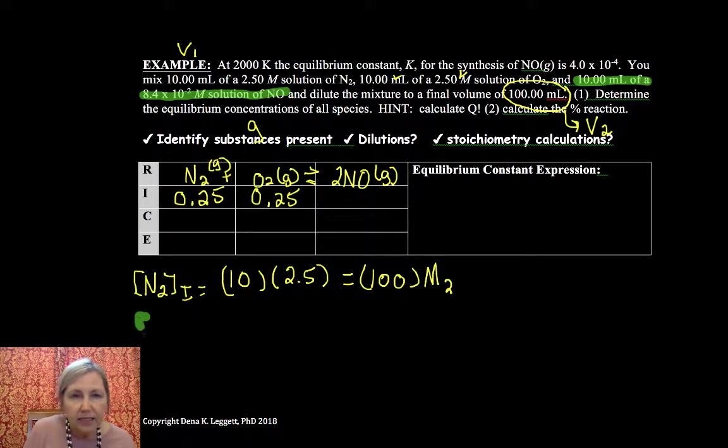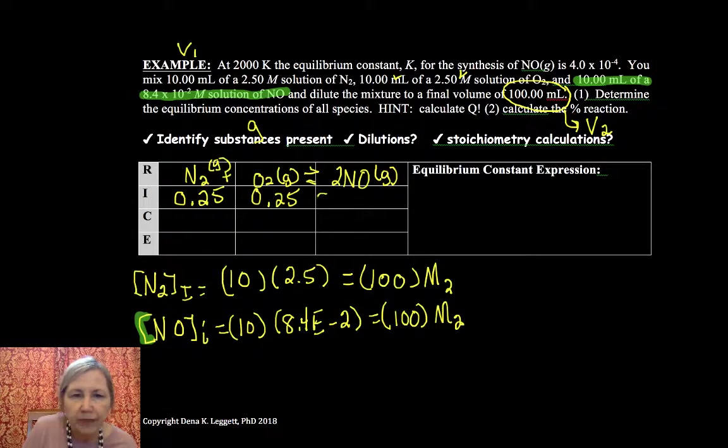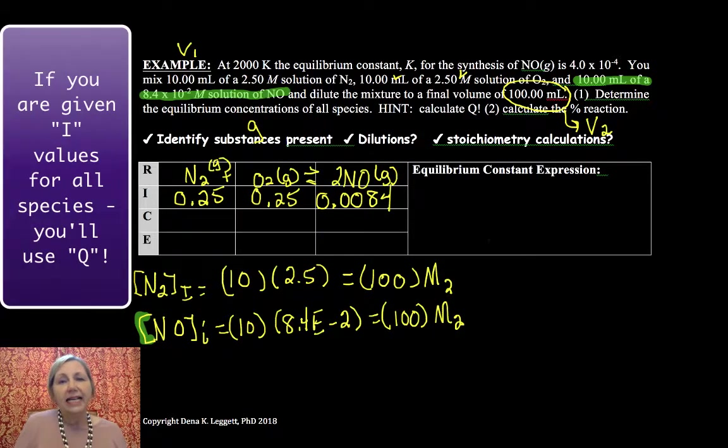Now this time, if you'll notice, I actually have an initial amount of my product, and so I have to dilute that as well. So my initial NO after dilution - so be careful - is 10 times 8.4 times 10 to the minus 2, that was brought up to the 100, and its new molarity is 0.0084.